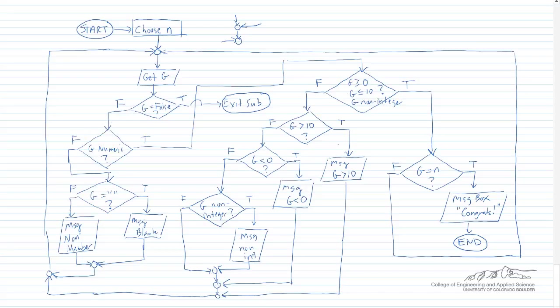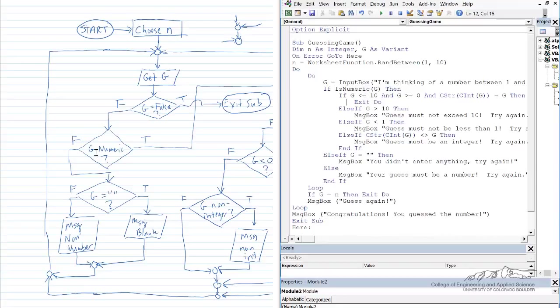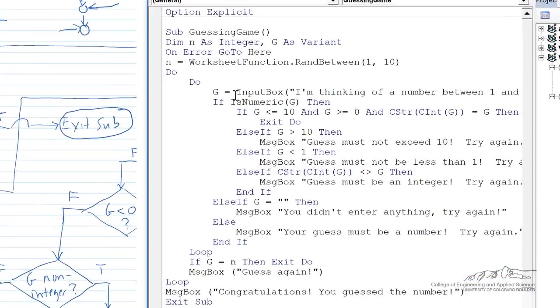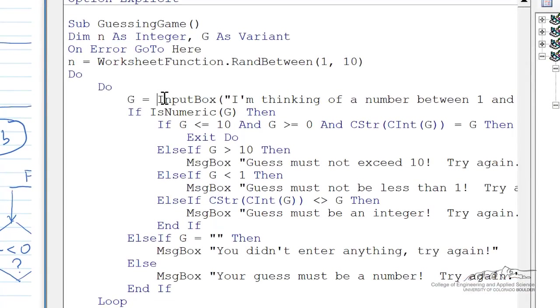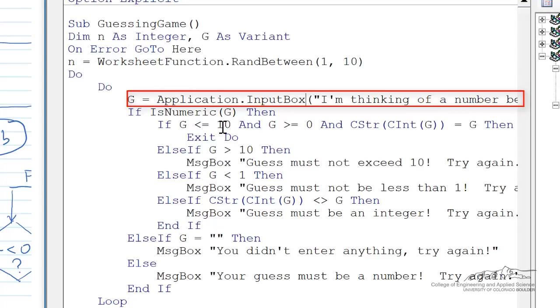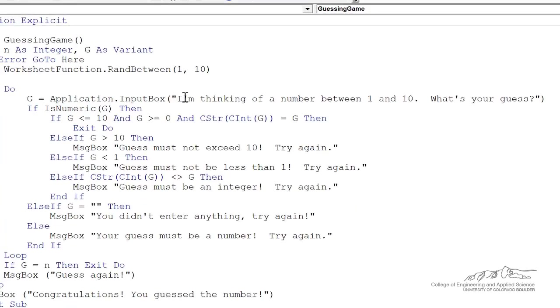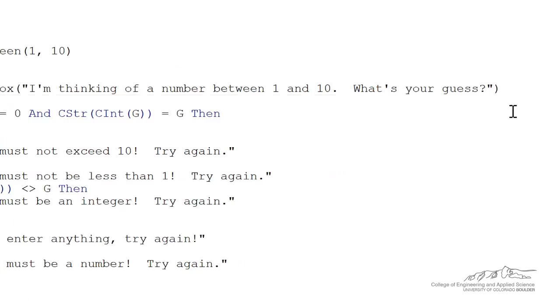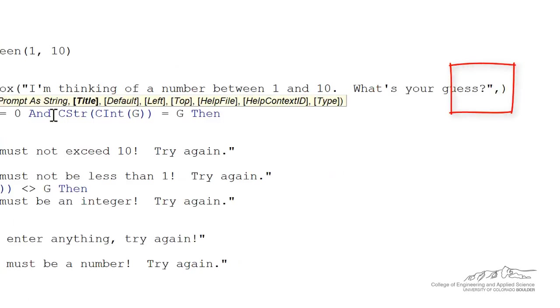Now let's implement this last little modification. The reason I put this G equals false is because there's an input box function which is shown here, but there's also an input box method. So if I type application dot input box, it is the input box method, and we can do a couple more things with the input box method. The end of the input box, there are optional arguments, and you notice when I start typing that in, it tells us the optional arguments. So for now, let's just ignore all the other arguments. The important thing is the last argument, which we're going to put a 3.